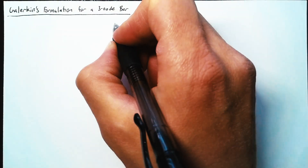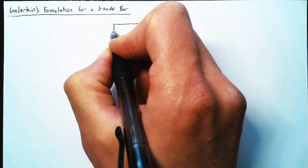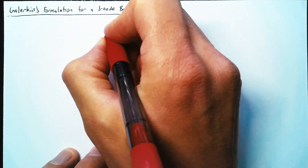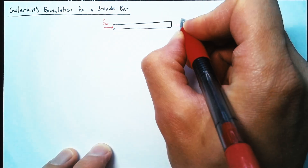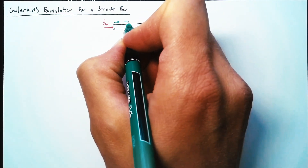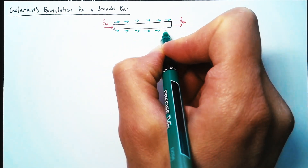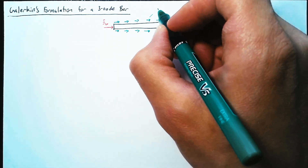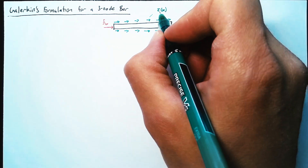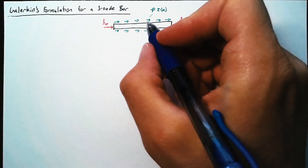To start off, we need to look at the type of element we're going to be analyzing, which is a bar, and we want to see what forces are being applied. We know that we want some forces on each of the nodes, but let's also apply a shear force along the perimeter of the element. The way we're going to formulate this is as some shear stress, which can vary as a function of x, multiplied by the perimeter.